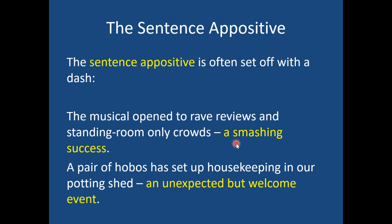A sentence appositive is set off with a dash, which signals that we're dealing with an appositive renaming an entire sentence. 'The musical opened to rave reviews and standing-room-only crowds — a smashing success.' I'm not just saying the musical was a success; I'm saying the whole situation — opening to rave reviews and standing-room-only crowds — is a success. Or: 'A pair of hobos has set up housekeeping in our potting shed — an unexpected but welcome event.' The event is the fact that these hobos are living in your shed, captured by the dash-introduced appositive.